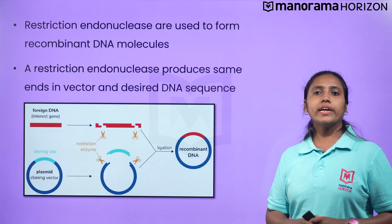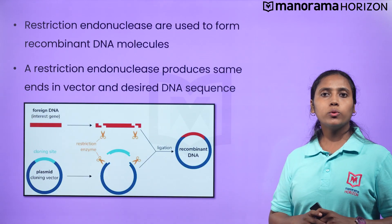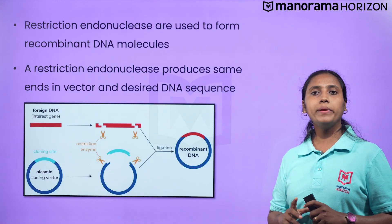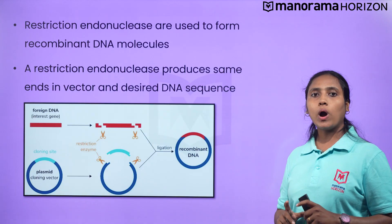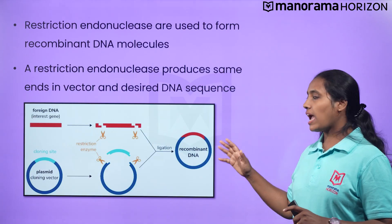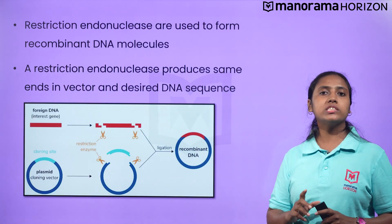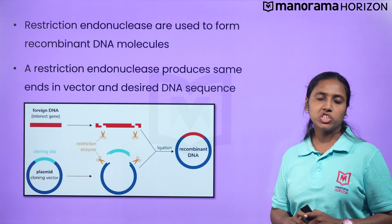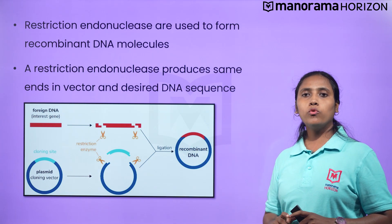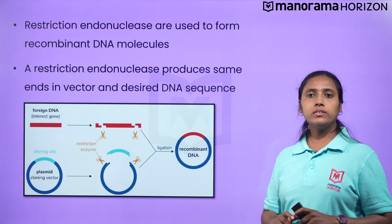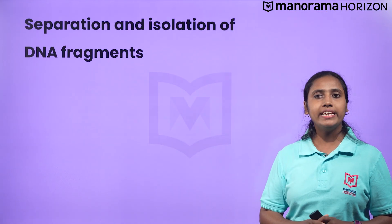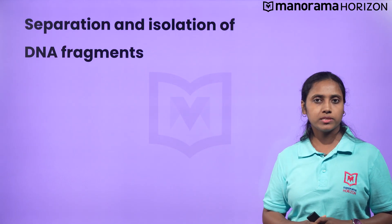We can conclude that the recombinant vector molecule cannot be created unless one cuts the vector and the source DNA with the same restriction enzyme. We will now move on to the separation and isolation of DNA fragments.